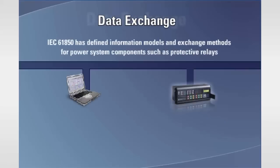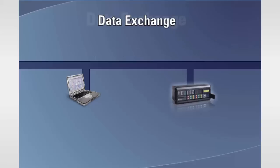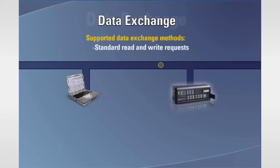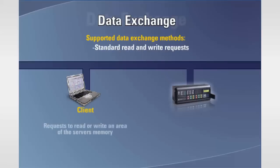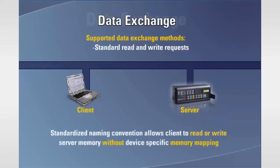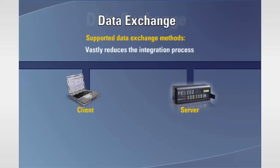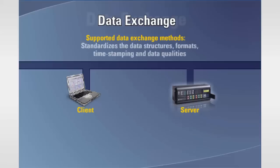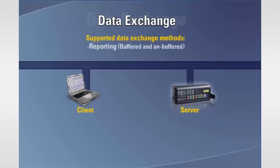IEC 61850 has defined the information models and exchange methods for power system components such as protective relays. Within IEC 61850, the supported data exchange methods include standard read and write requests, in addition to buffered and unbuffered reports. With read and write requests, the client requests to read or write an area of the server's memory, and the server responds. Within IEC 61850, a standardized naming convention allows the client to read or write server memory without device-specific memory mapping, vastly reducing the integration process. This protocol also standardizes the data structures, formats, time stamping, and data qualities. The second data exchange method is known as reporting, which is ideal for sampled value distribution, historical data, sequence of event logs, and control devices.